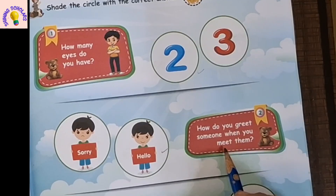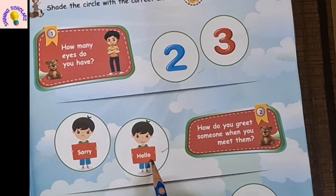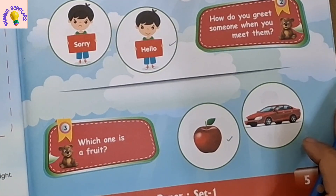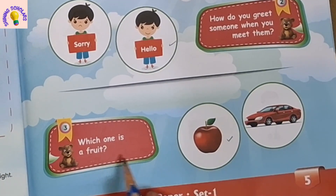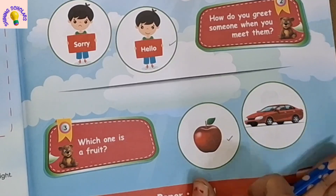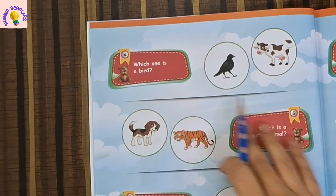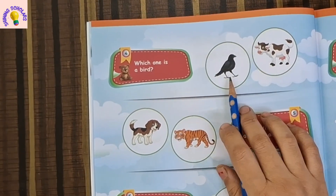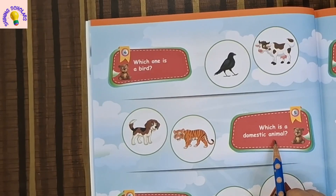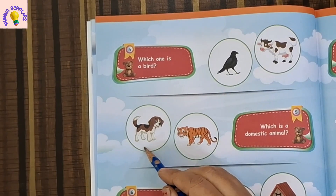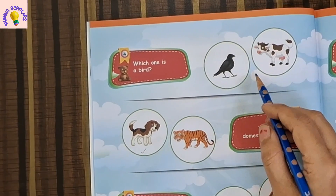Which one is a fruit? Apple. And this is a car, so apple is a fruit. Next question: which one is a bird — crow or a cow? Crow is a bird. Which is a domestic animal — dog or tiger? Dog is a domestic animal.